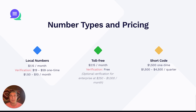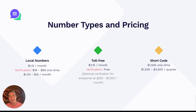Next up, we have toll-free numbers. These are going to be $2.15 a month. The verification is completely free to submit and keep active. There is an optional verification step for something called high-throughput toll-free for enterprise customers that ranges from $250 to $1,000 a month. And lastly, we have shortcodes. These are going to incur $1,500 in one-time fees, and it's going to cost anywhere between $1,500 and $4,500 a quarter to keep that shortcode active.